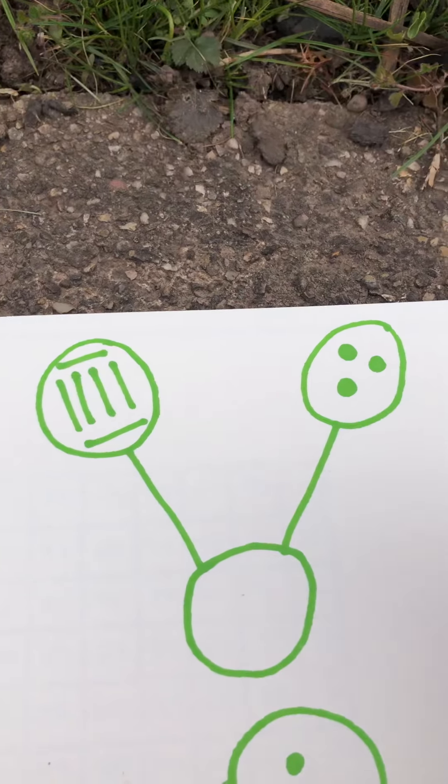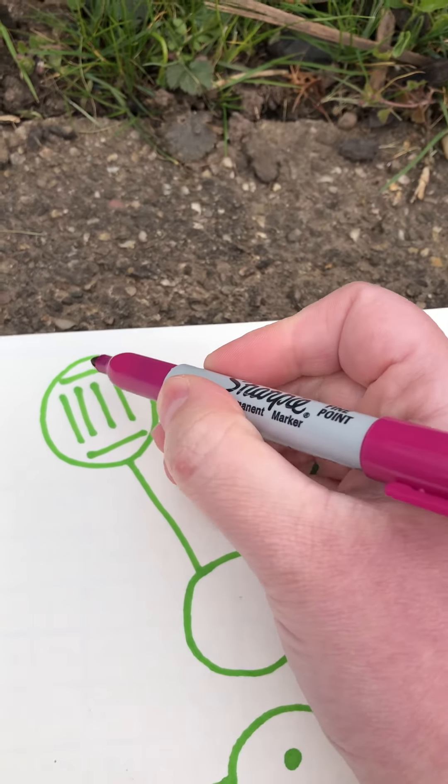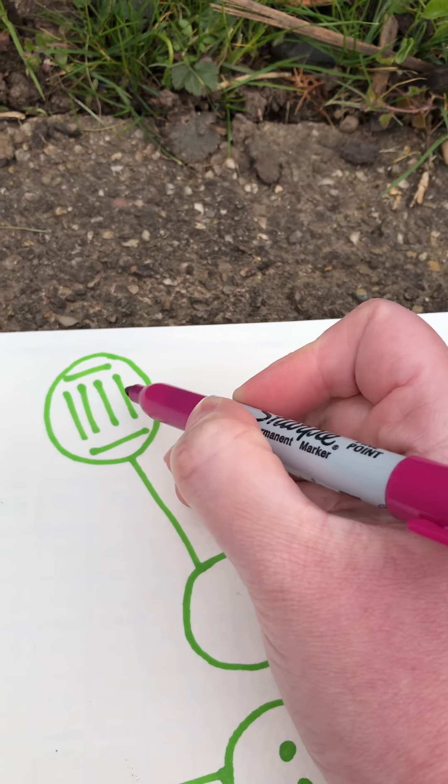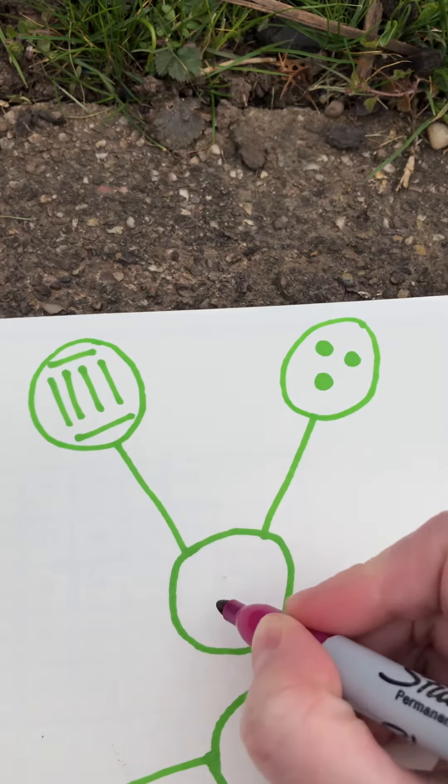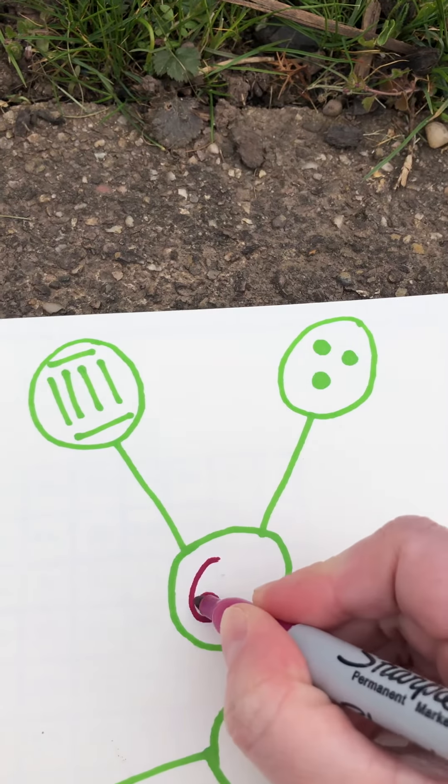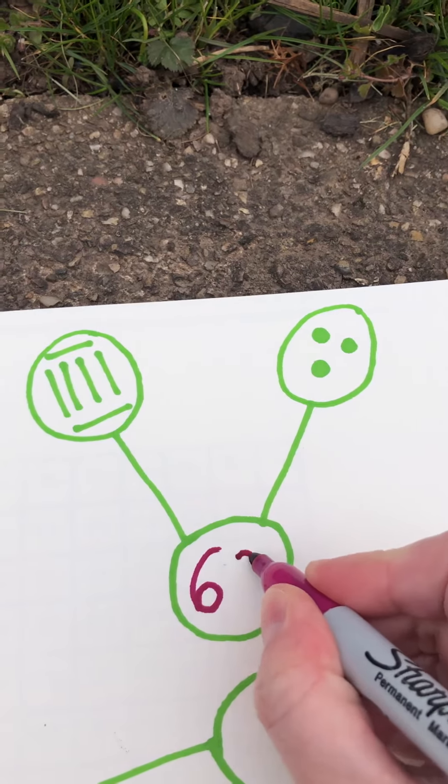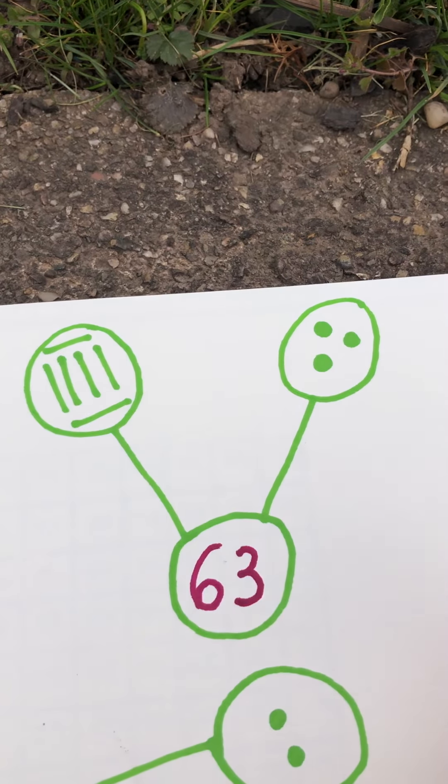Let's have a look at this one. So count the rods first. Just always count the tens first. 1, 2, 3, 4, 5, 6. So there are 6 tens. 1, 2, 3. And 3 ones.